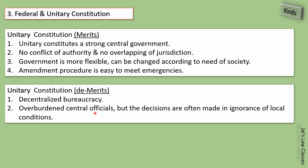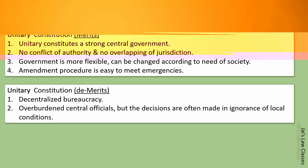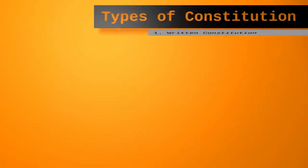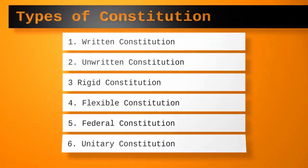Let's revise the types of constitution: written constitution, unwritten constitution, rigid or flexible constitution, and federal or unitary constitution. Before we come back with another topic — a little request: respect your elders and love your juniors. It costs nothing but matters a lot.